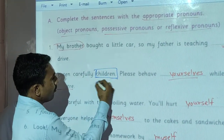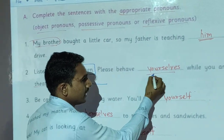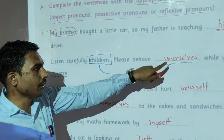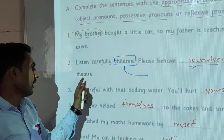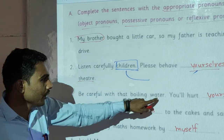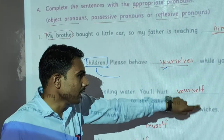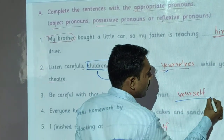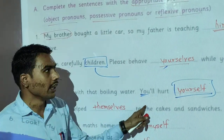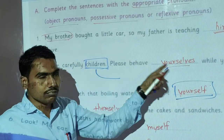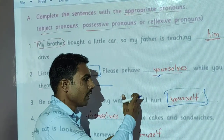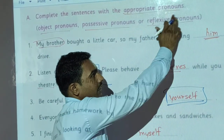Children is a noun, and we use reflexive pronouns. 'Yourselves' is used for children. Now the next example: Be careful with that boiling water — you will hurt yourself. We use the reflexive pronoun 'yourself' here because it indicates singular 'you'. When we indicate 'you' as singular, we use 'yourself'. When 'you' indicates plural, we use 'yourselves'.